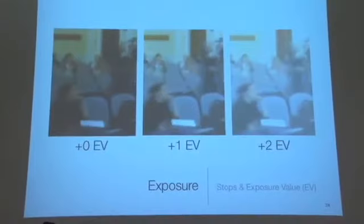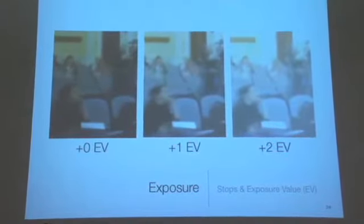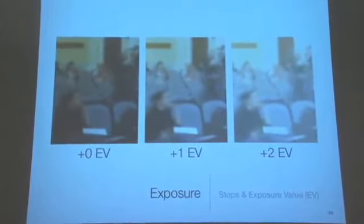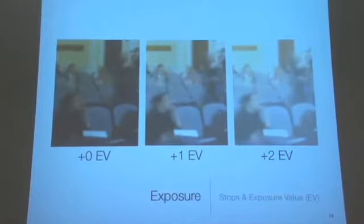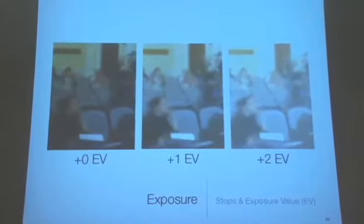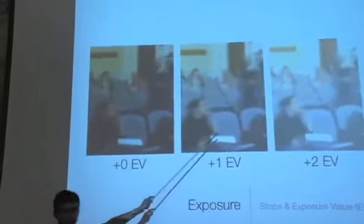So if we double the number of photons in a particular scene, we can make it twice as bright for the camera. It doesn't look twice as bright to us because the way that we perceive brightness is not linear — it's not a one-to-one relationship, it's actually very skewed in this almost logarithmic-looking graph. But a camera is very literal when it is recording photons from a scene.